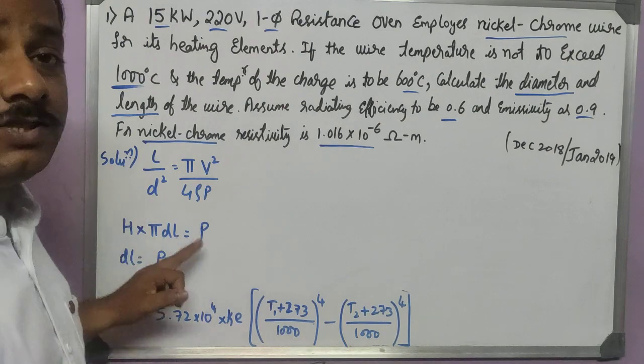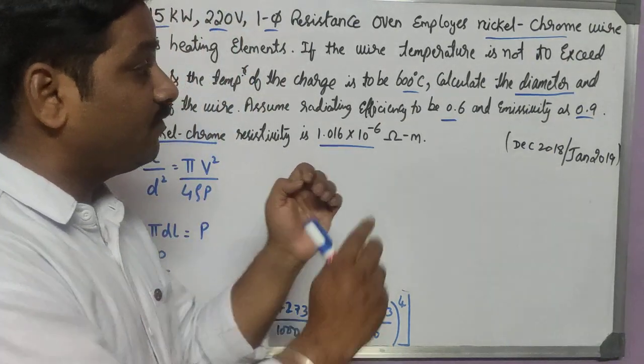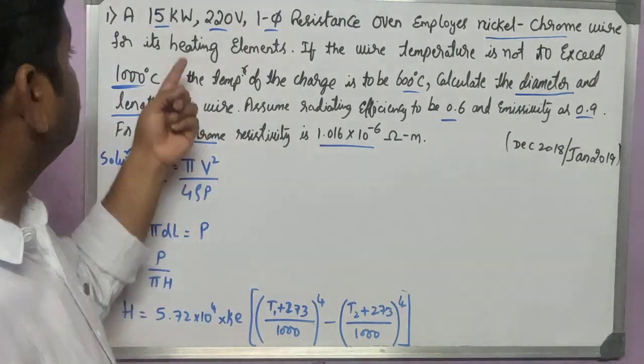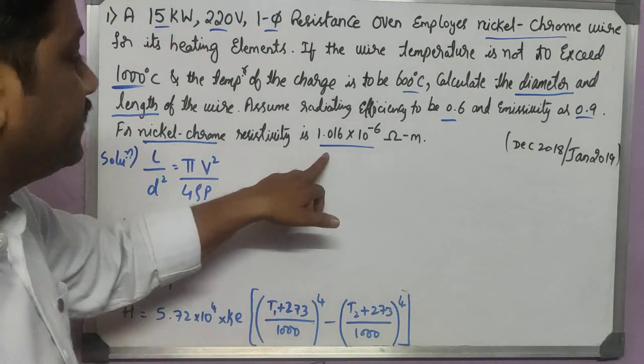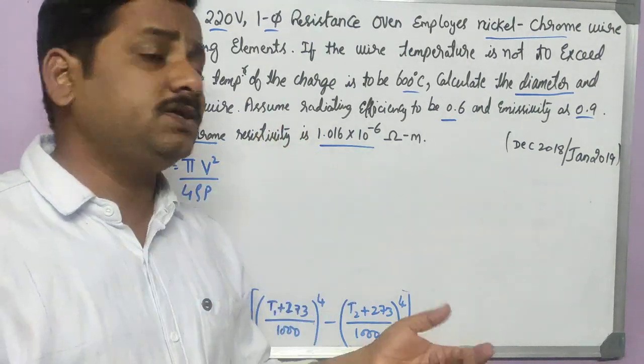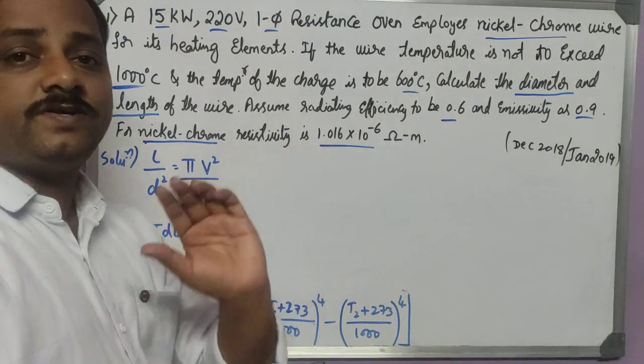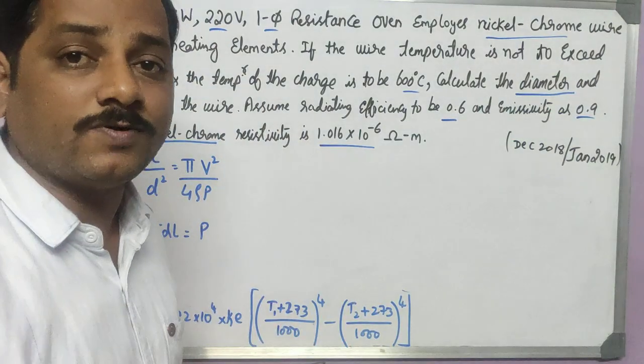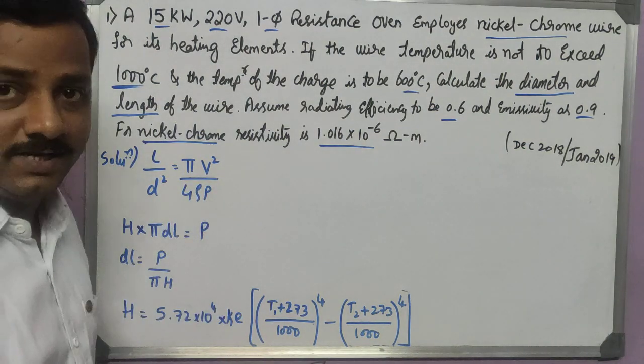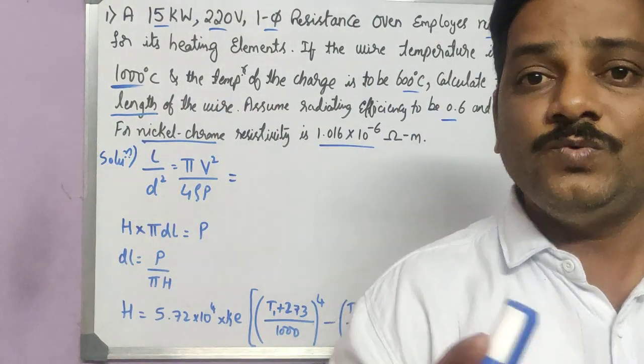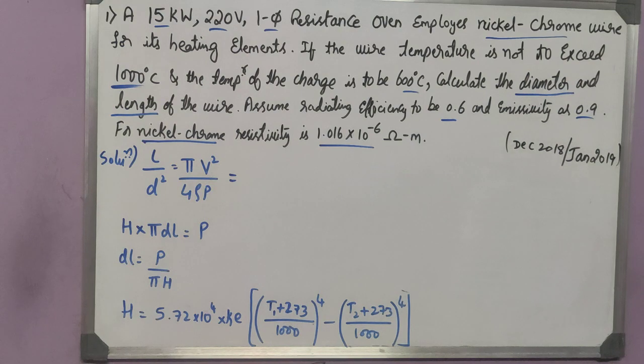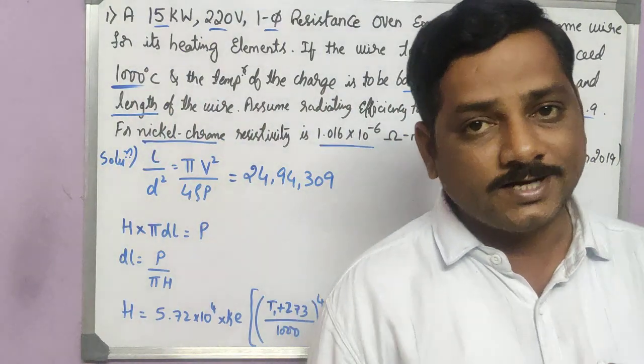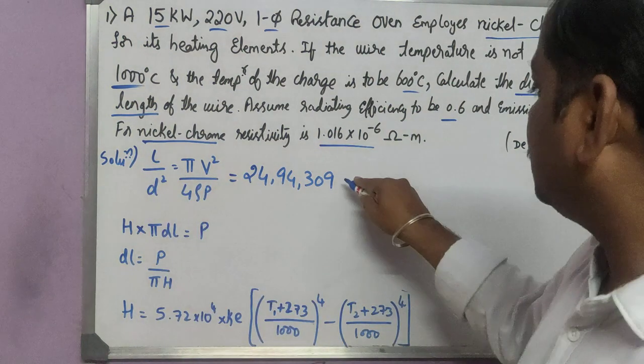The formulas for circular coil: L by d square can be given as pi V square by 4 rho P. Rho is the resistivity. Using this I can identify what is L by d square. But my requirement is to find separate diameter and L. How can we find this value? Yes, we know voltage is 220, resistivity is given, and power is 15 kilowatts. Substitute it as 15 into 10 to the power of 3 or 15,000. Once you simplify, we get L by d square equals 24,094,309. Let me name this as equation 1.